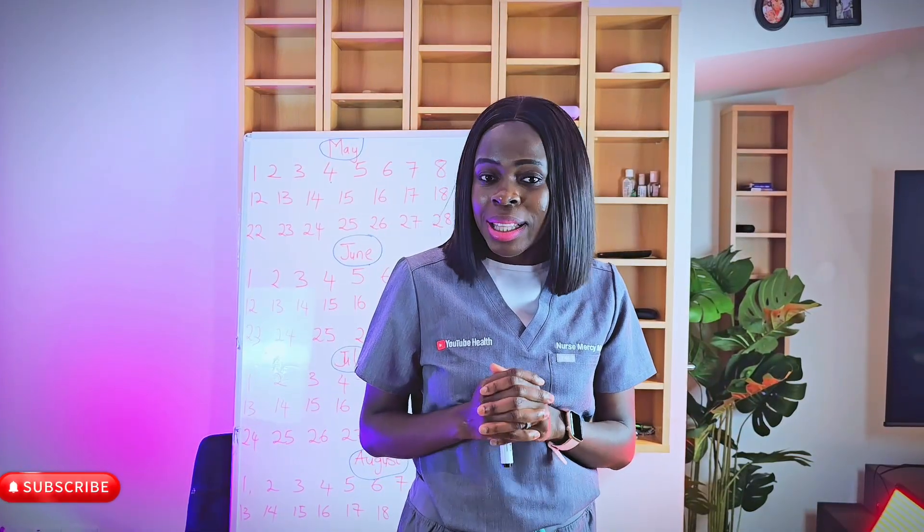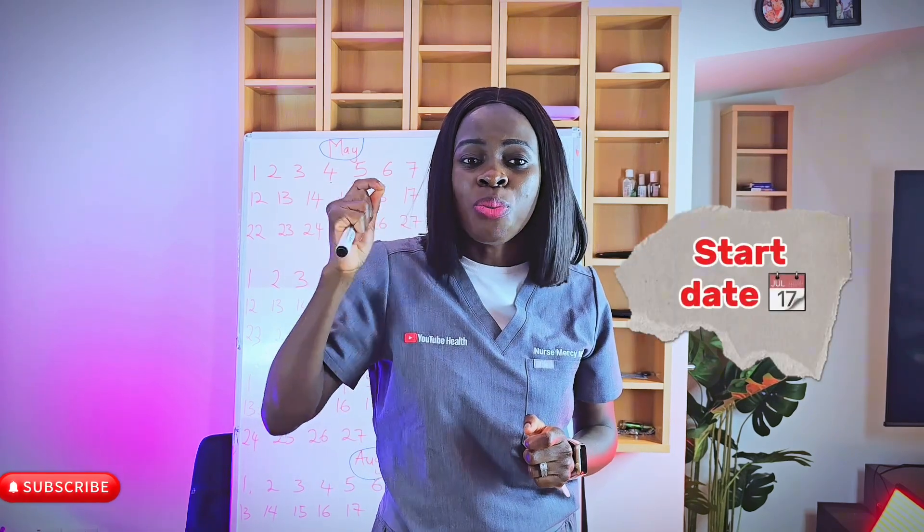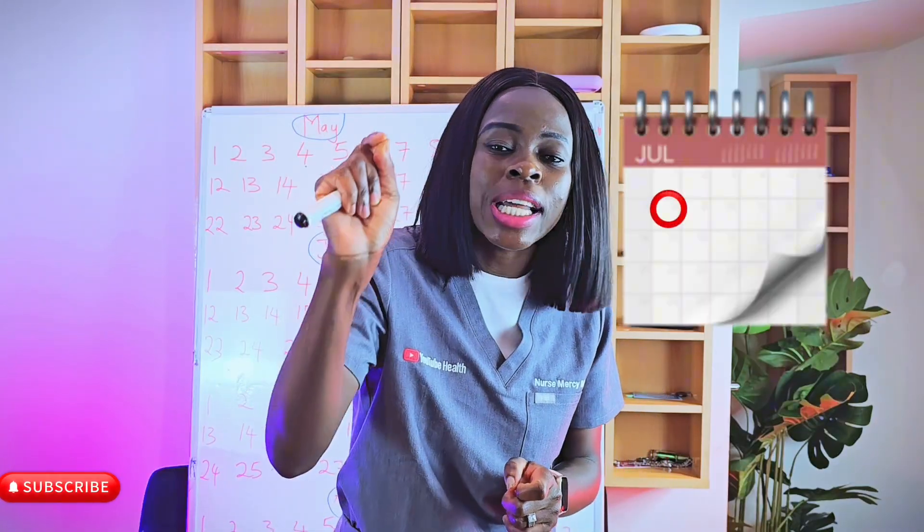When trying to calculate your menstrual cycle, the first thing you should take note of is the start date of your period — the start date of your period. For example, your period started today, let's say today is Monday. That day that you went to the toilet to check your pants and you saw blood, that is day one. So what you have to quickly do is go to your calendar and circle that particular day, because that is day one. What you need to calculate your menstrual cycle is the start date — the day you started your period, the day you went to the toilet and saw the blood. That is the start date of your period.